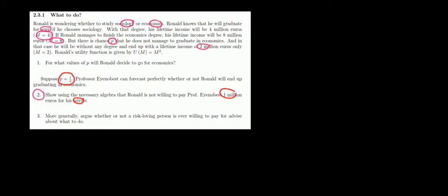So we'll write it here below. We have the expected utility from not paying for advice, so expected utility without advice. We know that there is a probability of 1 over 2 that we are going to fail, and if we fail we'll have an income of 2. The income would be 2 if we fail in economics.